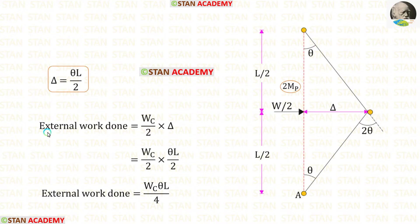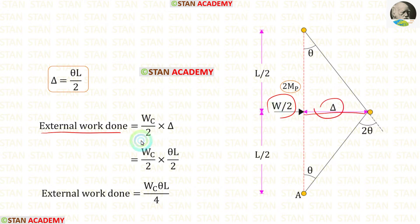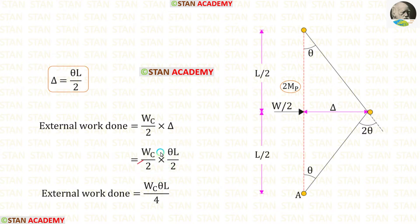Now let us find the external work done. We multiply the load W/2 with the displacement δ. For δ we apply θL/2. After multiplying, the external work done equals Wc·θL/4.